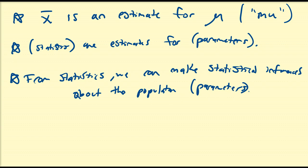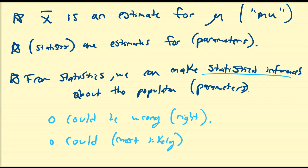Now, some things to keep in mind, though, about these statistical inferences. They could be wrong. They also could be right. And they could, that's not could, C-O-U-L-D. Could, and this is usually most likely, contain error.